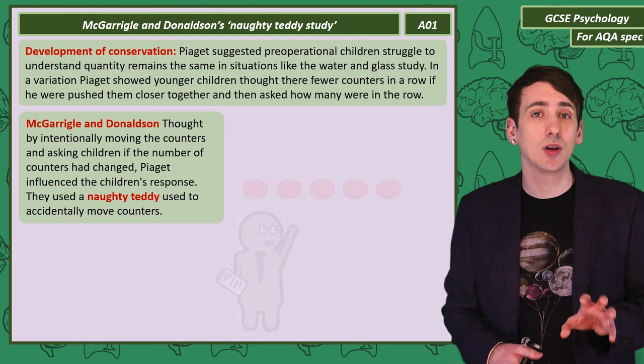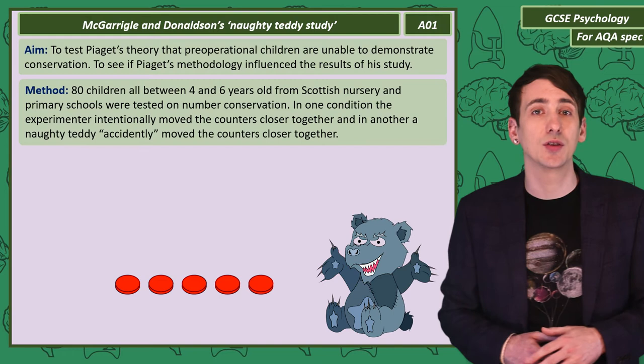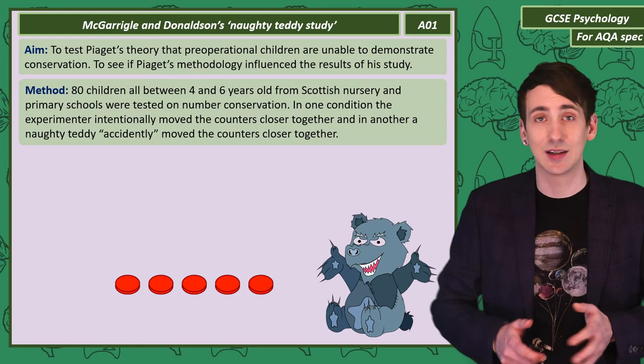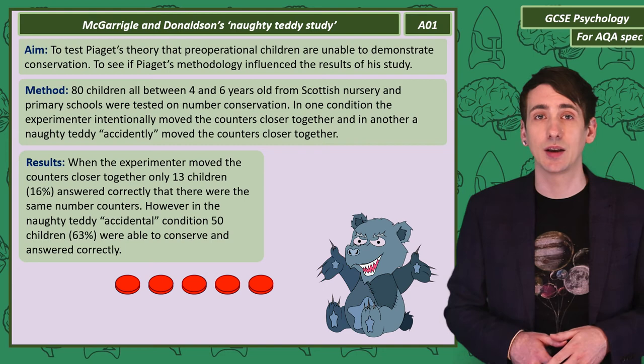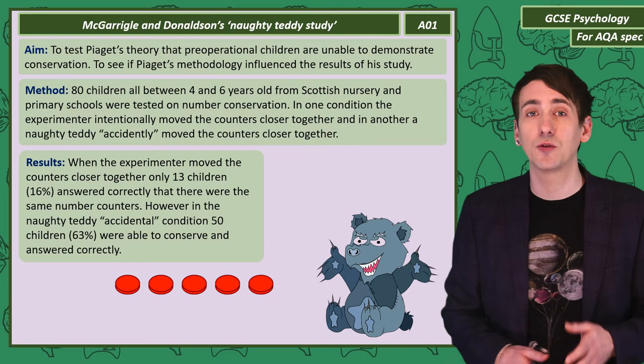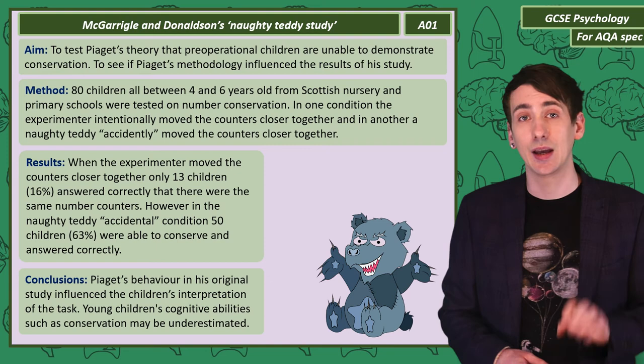So they decided to set up a similar study, but instead of the researcher moving the counters, a Naughty Teddy would do it accidentally. They used 80 children aged between 4 and 6 from Scottish nurseries and primary schools. In one condition the experimenter moved the counters closer intentionally, and in another the Naughty Teddy accidentally moved them. The researchers found that when the experimenter moved the counters, only 13 children — 16% — were able to conserve, but in the Naughty Teddy condition, 50 children — 63% — were able to conserve and answered correctly that there were the same number of counters. The researchers concluded that Piaget influenced the behaviour of children in his original study and underestimated young children's ability to conserve.